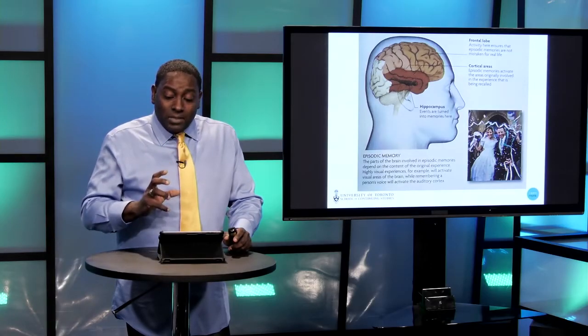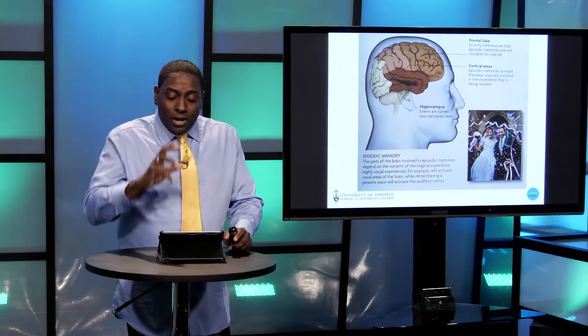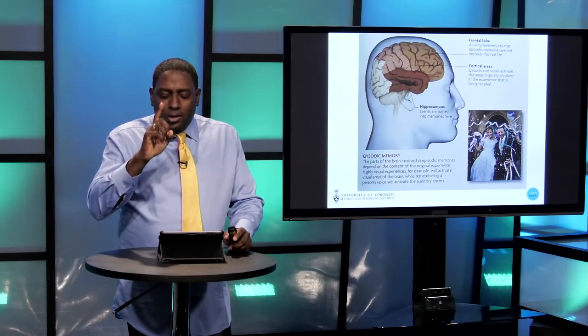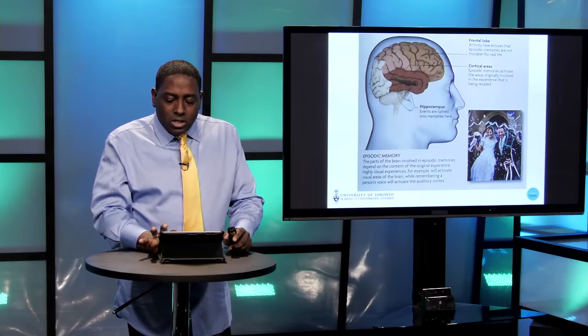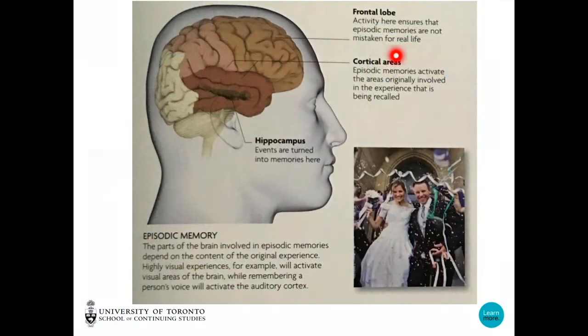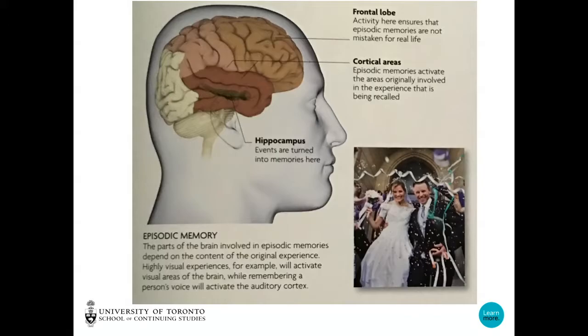What I really want you to grasp now is the effect of the frontal lobe. Cortical areas — episodic memories activate the areas originally involved in the experience that is being recalled. If it was a visual experience, then which lobe is that? The occipital lobe. If it's an auditory experience, the temporal lobe.